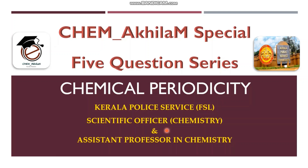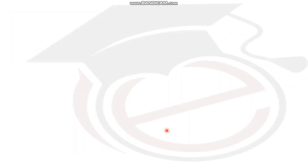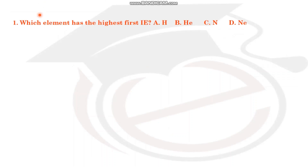We will start with chemical periodicity. The first question is: which element has the highest ionization energy? The options are hydrogen, helium, nitrogen, and neon.